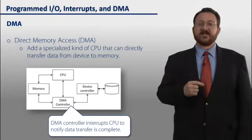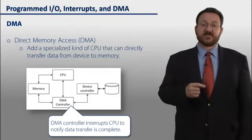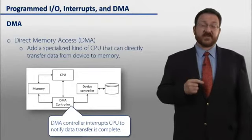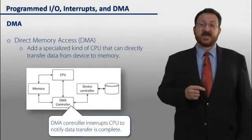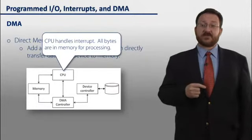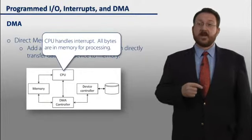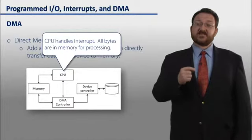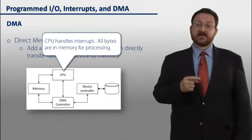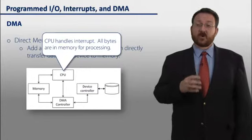Once that's completed, the DMA controller will then interrupt the CPU to notify it that the data transfer is complete. At this point in time, the CPU handles the interrupt using an interrupt handler, but the difference is that it has been interrupted only once instead of many times for a whole block of bytes.